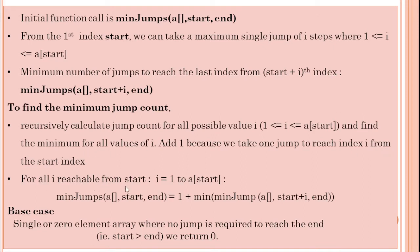For all i reachable from the start — that is, i varies from 1 to a[start] — we have the statement: min_jumps(a, start, end) = 1 + minimum of min_jumps(a_array, start+i, end). If i is 1 then start+1, if i is 2 then start+2, and so on in the function call. We add 1 because we have to add 1 for each jump taken from the previous location. For recursion, we have a recursive case and a base case. The base case is a single element at index 0: no jump is required. When start is greater than or equal to end, we return 0.